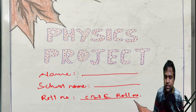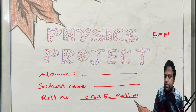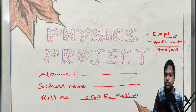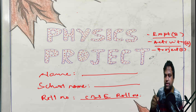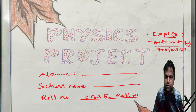For the physics practical exam, you have to submit three files this year: your experiment, your activity, and your project file. For the experiment, you have to submit a minimum of eight — four from each section. For activity, a minimum of six. And one investigatory project. There are different marks distributions for all these. 30 marks total is there for the practical exam.